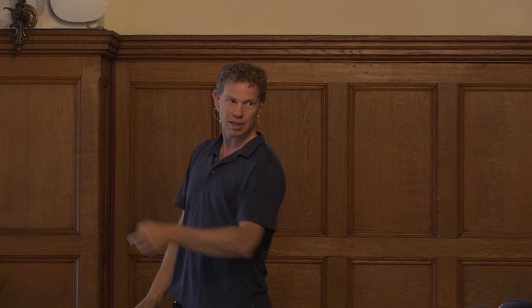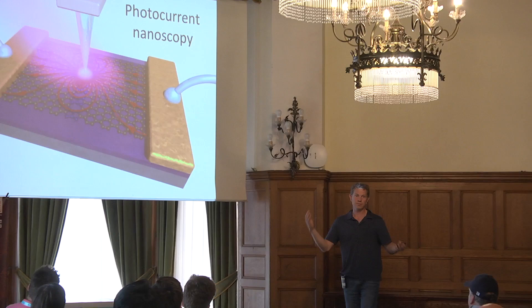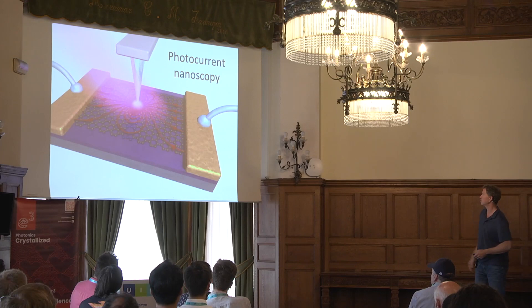Photocurrent nanoscopy is easier to understand because there's only one place where I shine light. Of course there's light coming from the far field, but let's assume there's just a local light source. That comes from the SNOM tip that is illuminated by light, which can be visible light, infrared light, or terahertz.